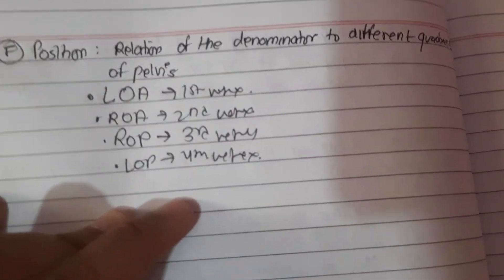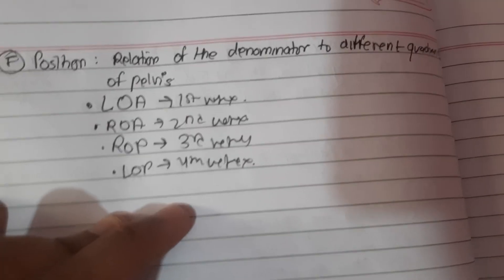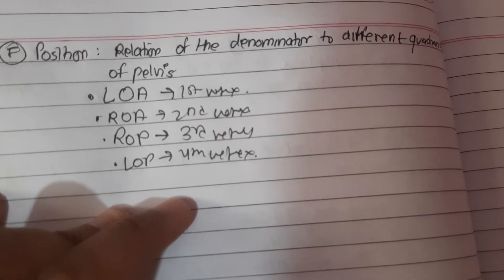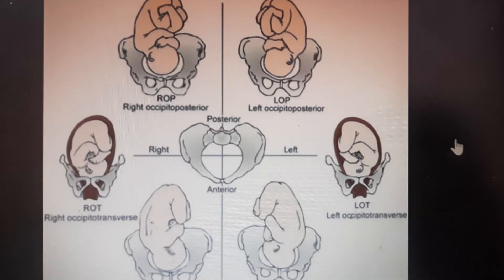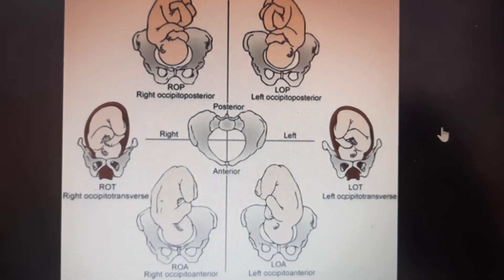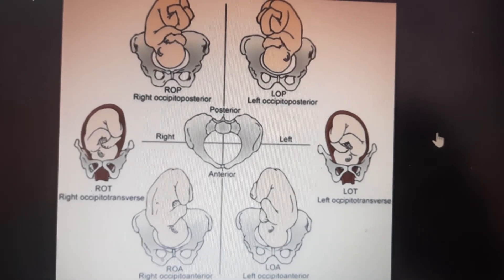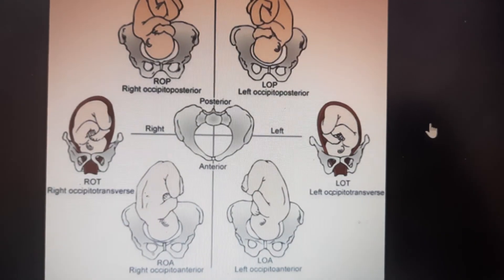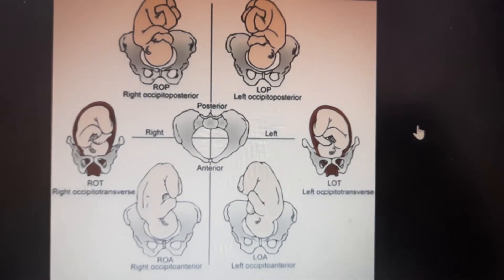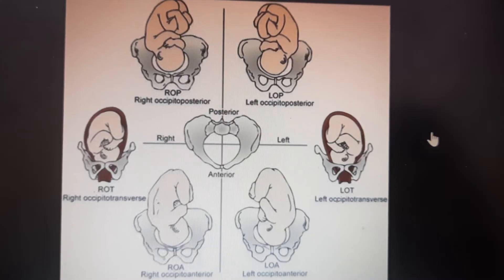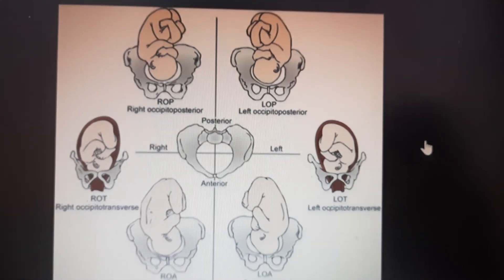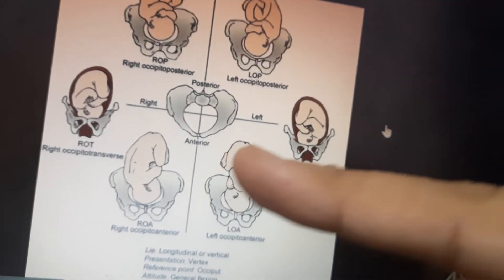'Position' is the relation of the denominator to the different quadrants of the pelvis. For descriptive purposes, the pelvis is divided into equal segments of 45 degrees to place the denominator in each segment. Theoretically, there are eight points with each presenting part — anterior, posterior, left, and right.